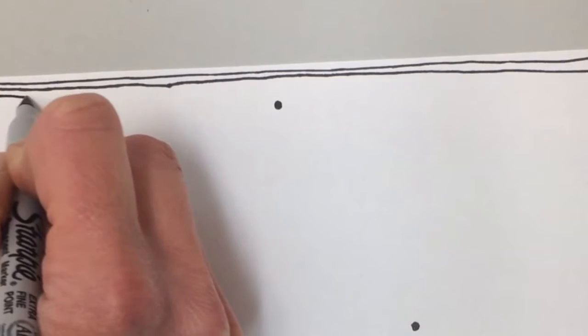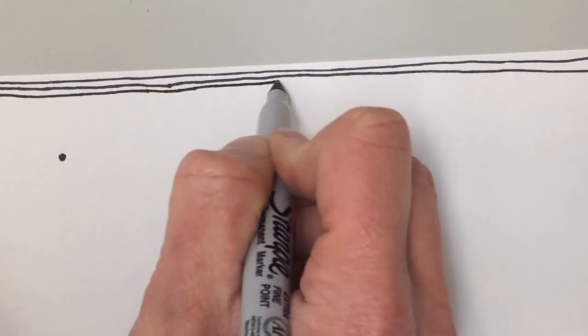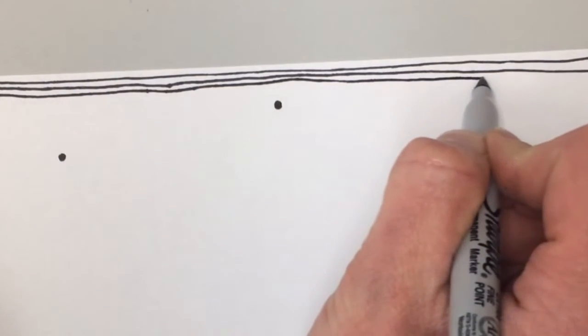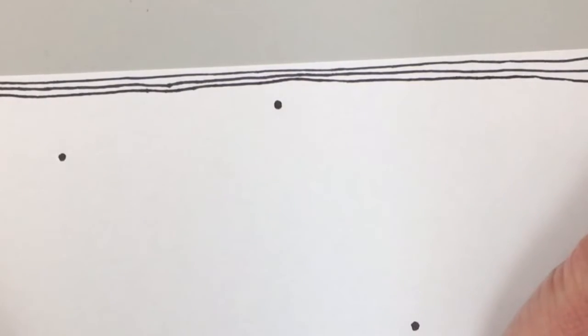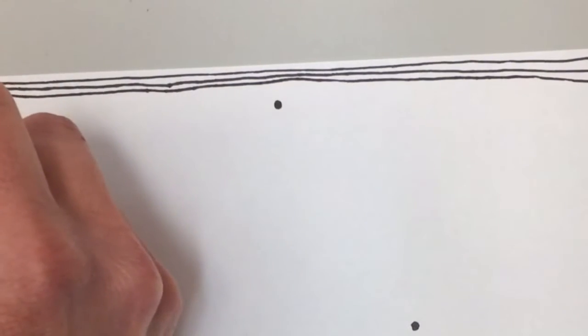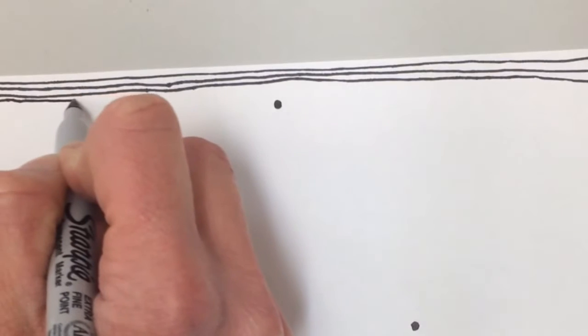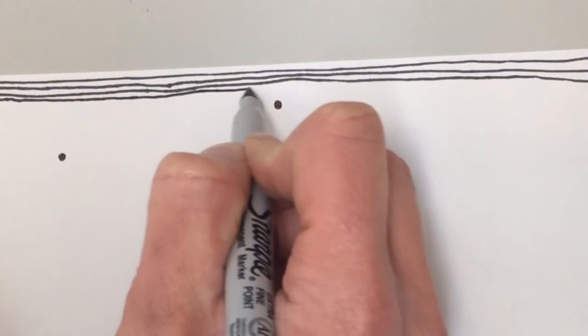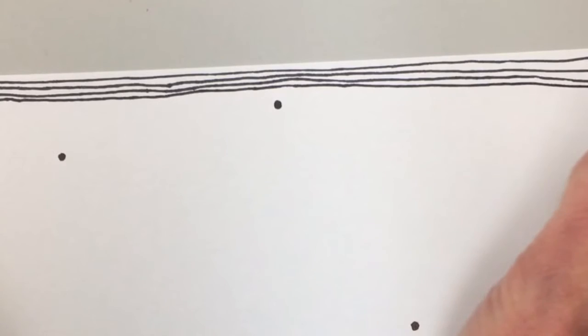Now, the next rule is when you make your next line, you want to make it as close to the line on top of it as possible. It's actually better if you accidentally bump some of those lines as you go. It's better to have those lines closer together than to have those lines too far apart.